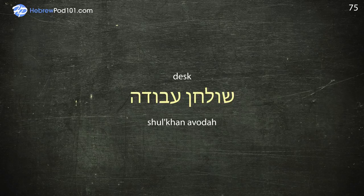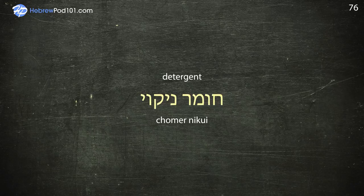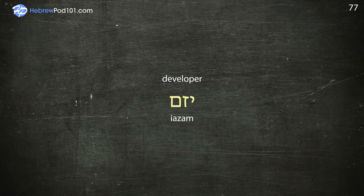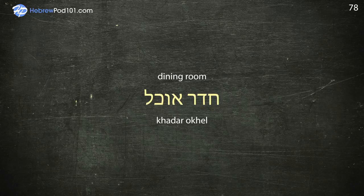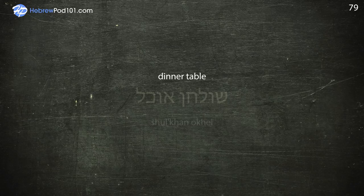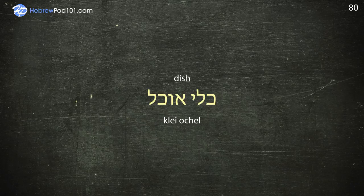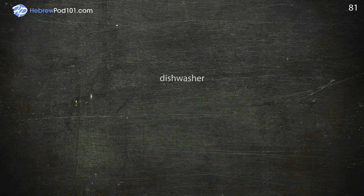Detergent — Chomer Nikoi. Developer — Yazam. Dining room — Cheder Okel. Dinner table — Shulchan Okel. Dish. Dishwasher — Mediach Kelim.